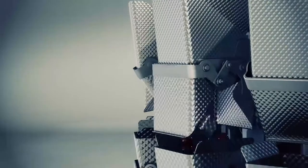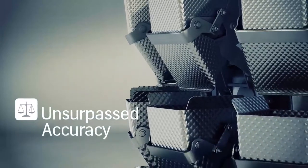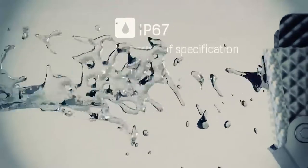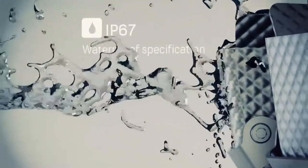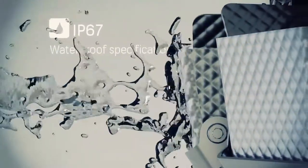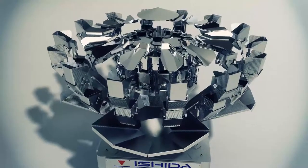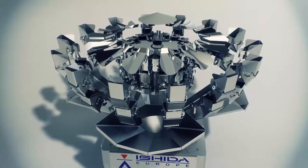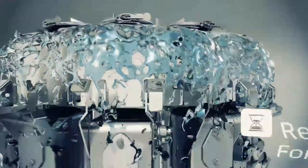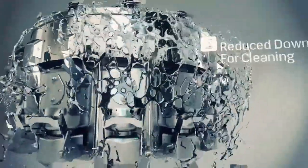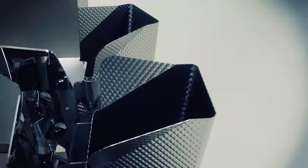The RV's IP67 waterproof specification offers additional protection in the harshest of environments. In addition, the hoppers and other contact parts are easy to remove and replace. The result? Reduced downtime for cleaning, allowing you to restart production faster.